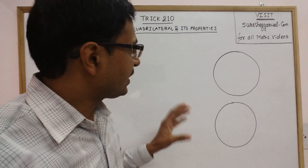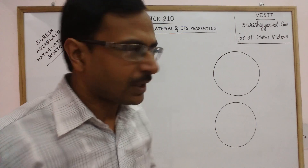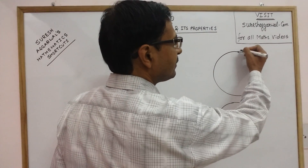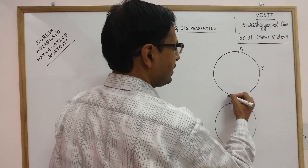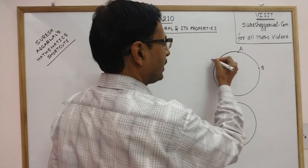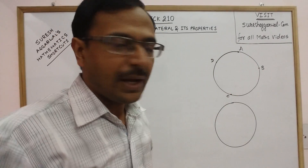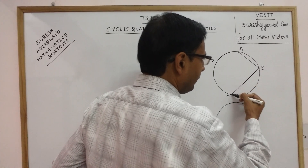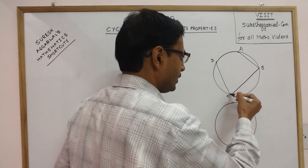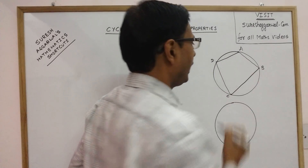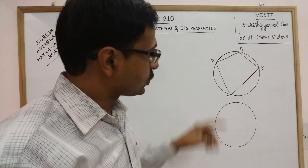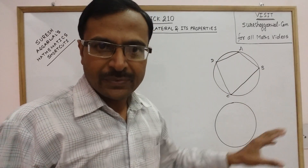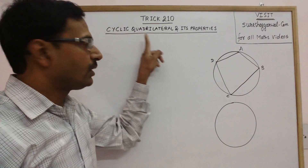Let us first understand what a cyclic quadrilateral is. Suppose we have a circle of any radius. Take any four points A, B, C and D anywhere on its circumference and join them in order — A to B, B to C, C to D and D to A. This four-sided figure whose all four vertices lie on the circumference of a circle is known as a cyclic quadrilateral.